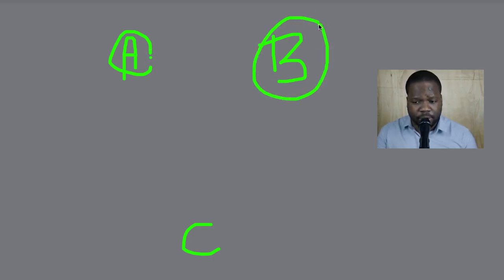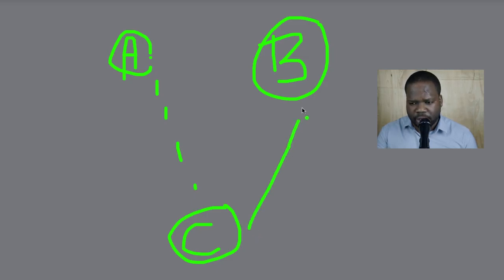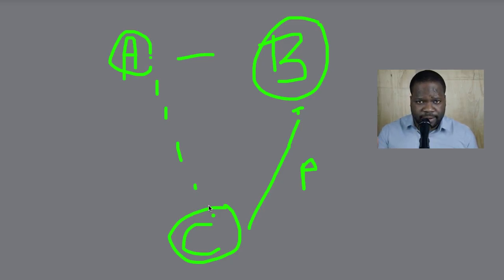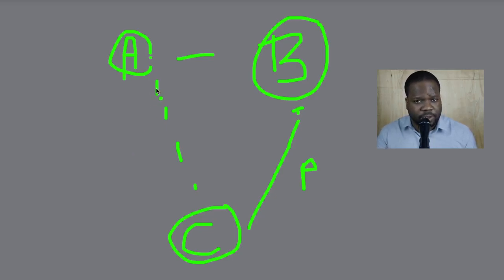A is the work itself. B is the copyright holder — so let's say you create something, you are B. C is that other person who wants to use this work. Normally, C needs to ask B for permission because B is the copyright holder. As soon as C has permission, C is allowed to use the copyright work.